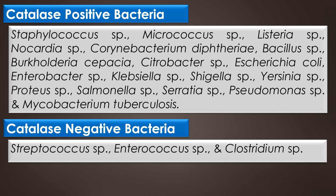Some examples of catalase-positive bacteria: Staphylococcus species, Micrococcus species, Listeria species, Nocardia species, Corynebacterium diphtheriae, Bacillus species, Burkholderia cepacia, Citrobacter species, E. coli, Enterobacter species, Klebsiella species, Shigella species, Serratia species, Salmonella species, Pseudomonas species, and Mycobacterium tuberculosis. Catalase-negative bacteria include Streptococcus species, Enterococcus species, and Clostridium species.